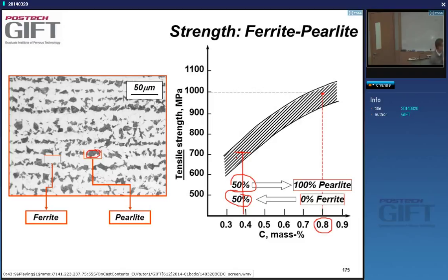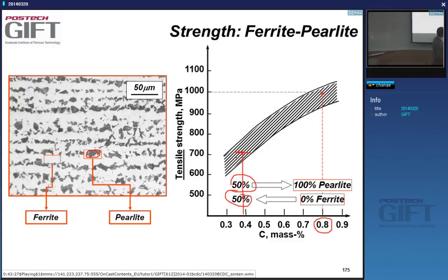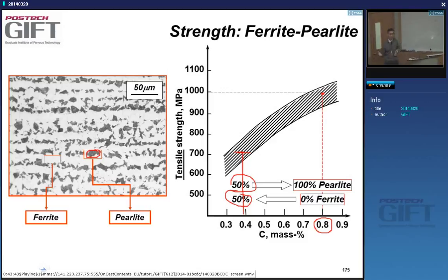The more you add carbon, the more hardenable your steel becomes — the easier it forms very hard and brittle martensite when you weld it. That is a big problem because we like to weld steel to join things. So you can make stronger steels, but they don't have good welding properties.